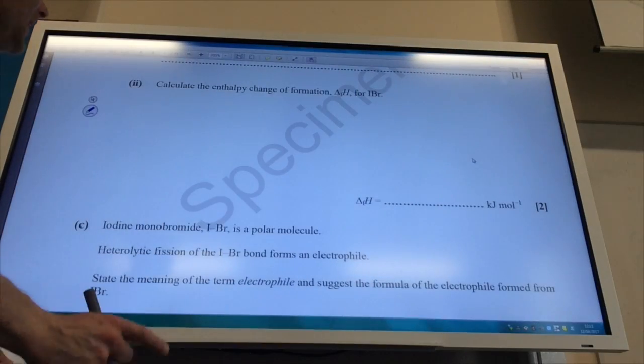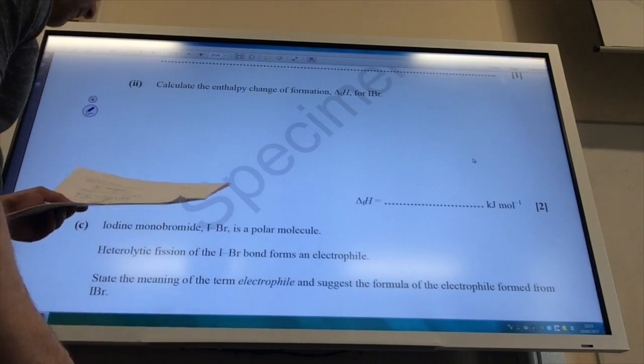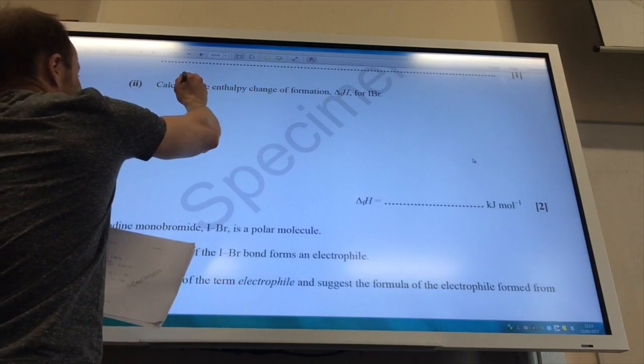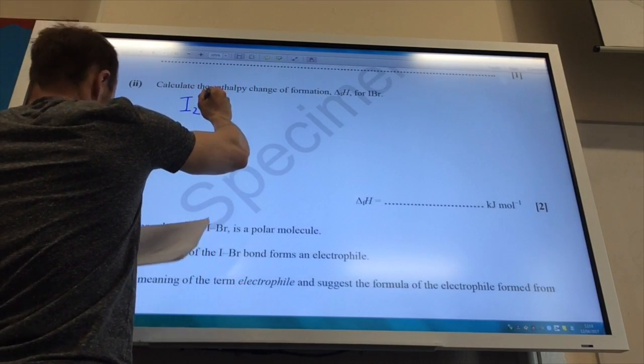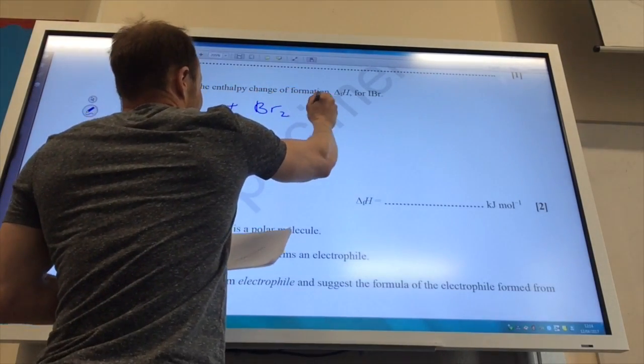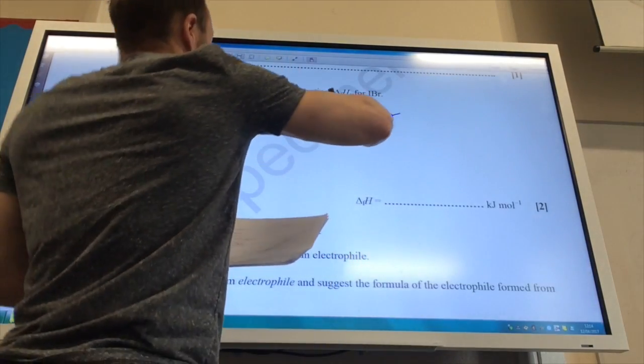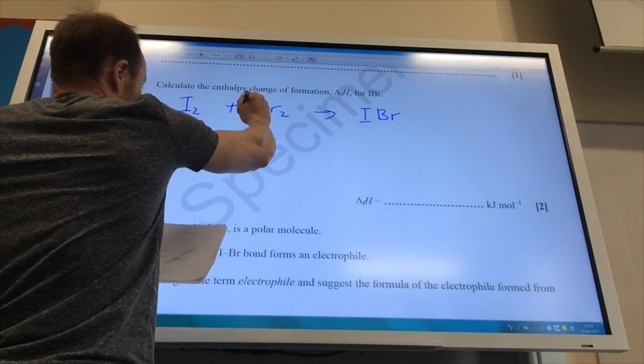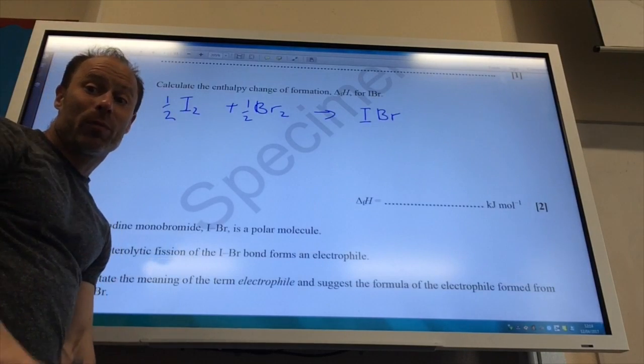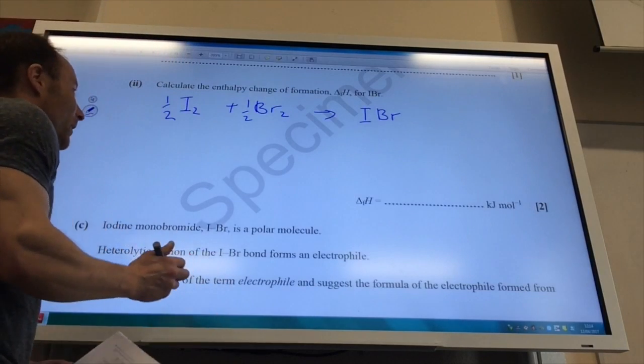So it now wants me to calculate the entropy change formation of IBR. OK, so here we go. What is the entropy formation? The entropy formation is I take the elements in their standard states to make one mole of IBR. I can't change that number, so that's got to be a half and that's got to be a half and that's got to be a half. And then I need to add up the bonds broken minus the bonds made.